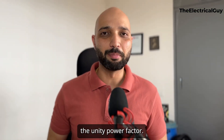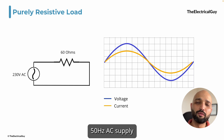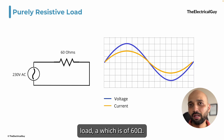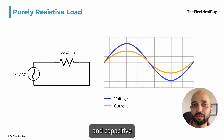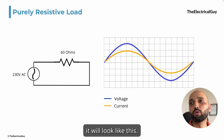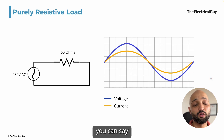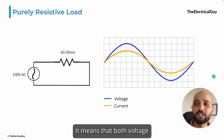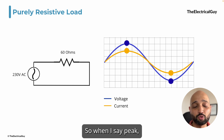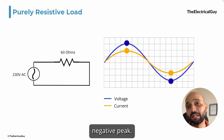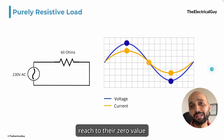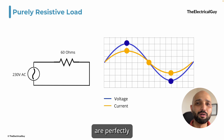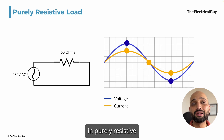First, let's start with the unity power factor. Here is a simple circuit: a 230 volt, 50 hertz AC supply connected to a purely resistive load of 60 ohms. Since there are no inductive or capacitive elements, the waveform shows that voltage and current are perfectly in phase — both reach their peak values at the same time, both positive and negative peaks, and also reach zero at the same time.